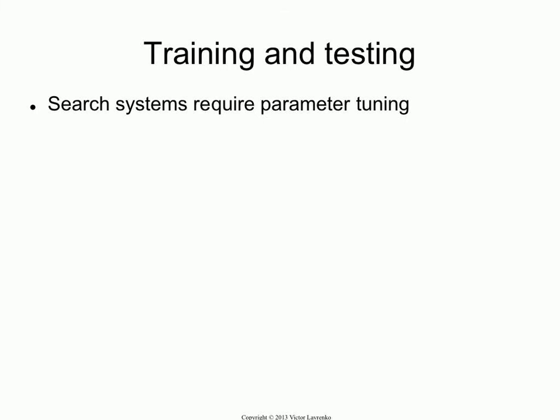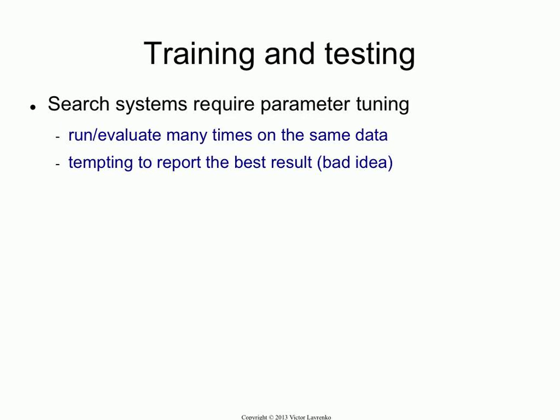More generally about training and testing: the algorithms we've described have lots of parameters that you want to tune. What you shouldn't do is tune the parameters and then report the best result you get from tuning on the same dataset you have. This would be overfitting, and it happens surprisingly often.